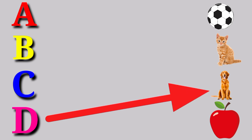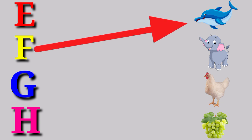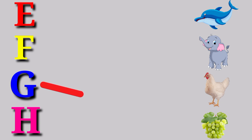E for Elephant, E for Elephant. F for Fish, F for Fish. G for Grapes, G for Grapes.